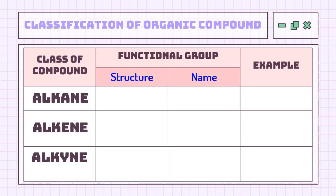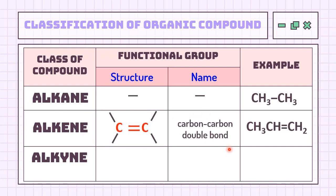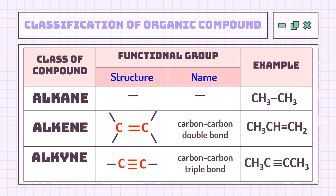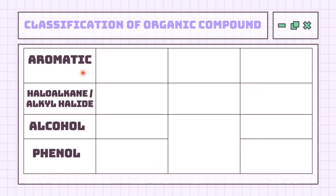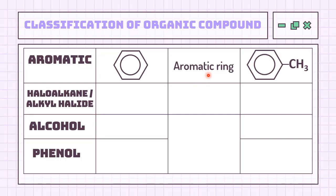Let's start with the class of compounds that contain carbon and hydrogen only. Alkane, since it has only single bonds, has no functional group. Alkene has the functional group of a carbon-carbon double bond, while alkyne has the functional group of a carbon-carbon triple bond. Another class of compound that contains carbon and hydrogen only is the aromatic compound, which has the functional group of an aromatic ring.